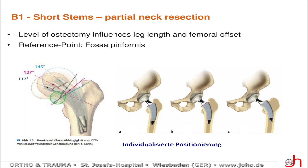What does this mean for our surgical procedure? We have to go back to the patient's anatomy and reflect on the best positioning of the stem. Especially for these type B1 short stems, we have to say goodbye to diaphyseal axis orientation. The orientation is calca-guided, so we have individual positioning with neutral alignment, varus alignment, or valgus alignment.